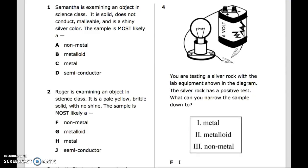Question 4: You are testing a silver rock with the lab equipment shown in the diagram. The silver rock has a positive test. What can you narrow the sample down to? 1. Metal, 2. Metalloid, 3. Nonmetal.